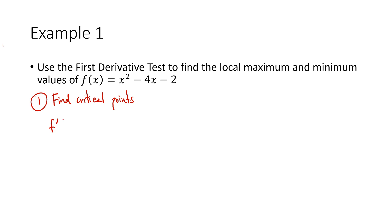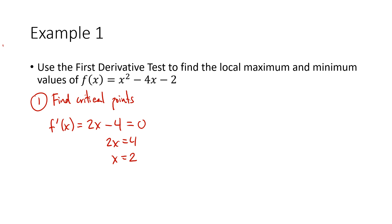The critical points are places where my derivative — which in this case is 2x minus 4 — is zero or undefined. That's a polynomial, so it's never undefined. We're just going to set it equal to zero and solve: add four to both sides, divide both sides by two, we get x equals two. So in this case we only have the one critical point.